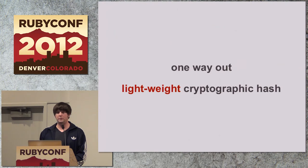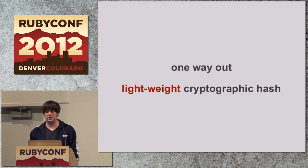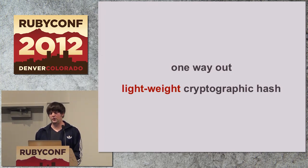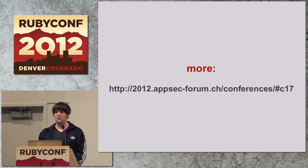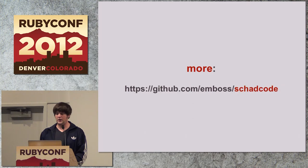One way out would be to use a cryptographic hash function. As we all know, MD5 or SHA-1 or whatever are just too slow. So what we actually want is a really fast cryptographic hash function that renders this attack infeasible. If you want to know more about how this works and actually want to see the demo, Jean-Philippe is going to give a presentation next week in Switzerland — I'm going to be there and will demonstrate how to use this attack on a real world Rails application. Afterwards, we are also going to publish this code. SHAD code is what you get if you apply schadenfreude to hash functions.